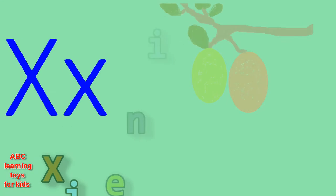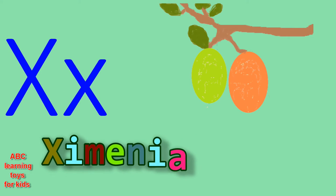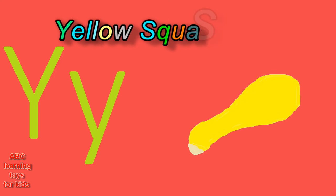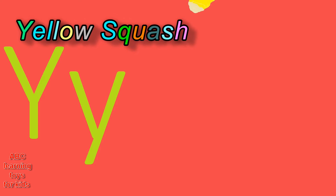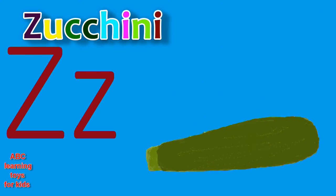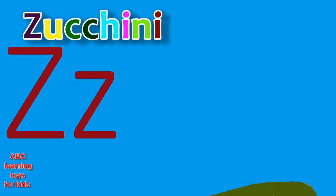X is for ximenia. Y is for yellow squash. Z is for zucchini. Z.